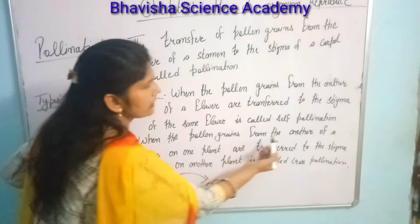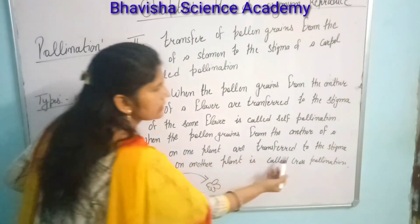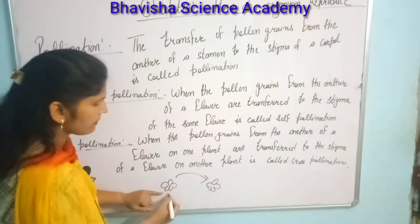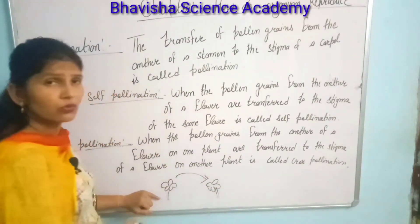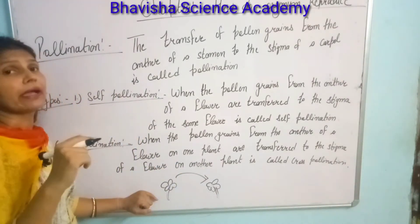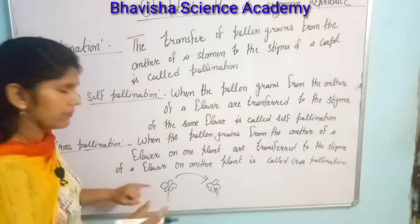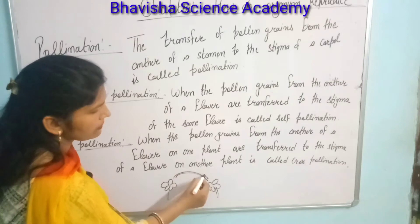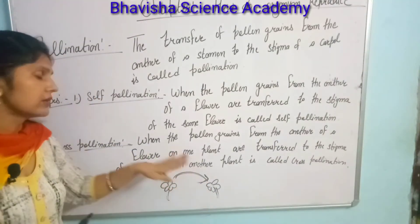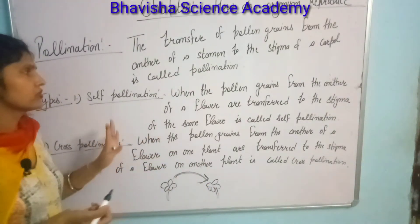Cross-pollination occurs when the pollen grains from one plant are transferred to the stigma of a flower on another plant. This transfer can happen by wind, by vectors, by water, by human activities, or by the help of insects and bugs. The transfer of pollen grains from one flower to another is known as cross-pollination.